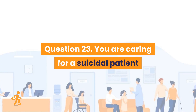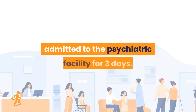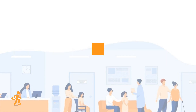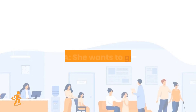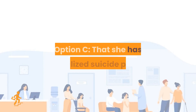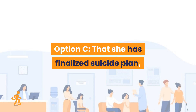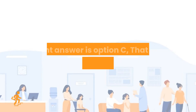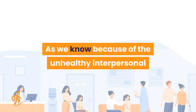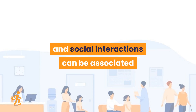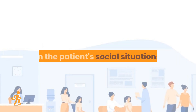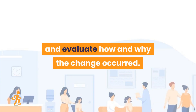Question 23. You are caring for a suicidal patient admitted to the psychiatric facility for 3 days. Suddenly she is showing signs of cheerfulness and motivation. What should you consider this change as? Option A: She wants to go home. Option B: Treatment and medication is working. Option C: She has finalized a suicide plan. Option D: She has made new friends. Right answer is Option C. Nurses should focus on any changes in the patient's social situations and evaluate how and why the change occurred.